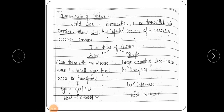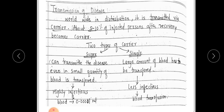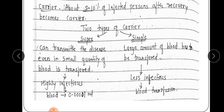Regarding transmission, HBV is transmitted via carriers or infected persons. About five to ten percent of infected persons become carriers even after recovery. There are two types of carriers: super carriers — who are highly infectious and can transmit as little as 0.00001 ml of blood — and simple carriers, who require a larger amount of blood to be transferred and are less infectious.